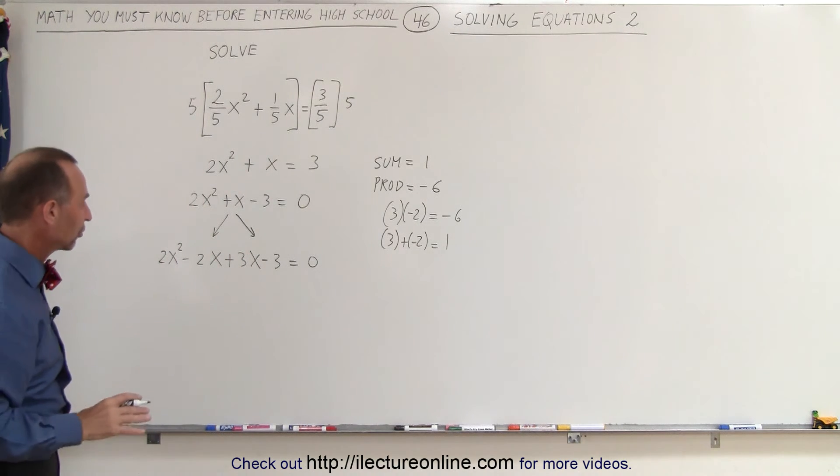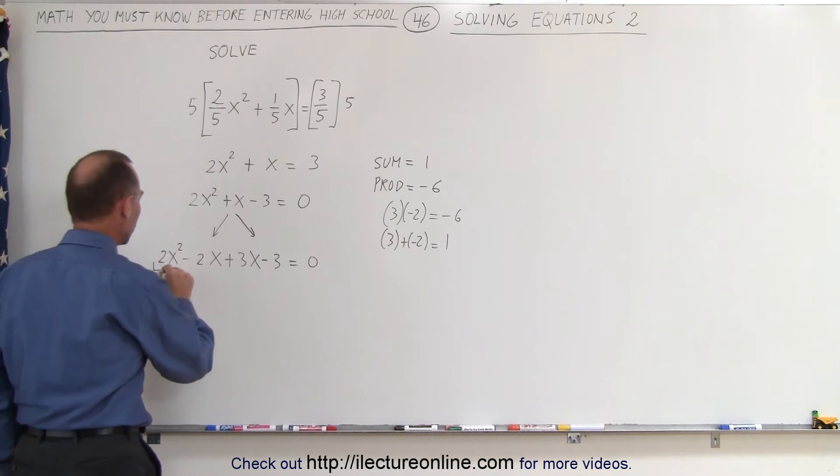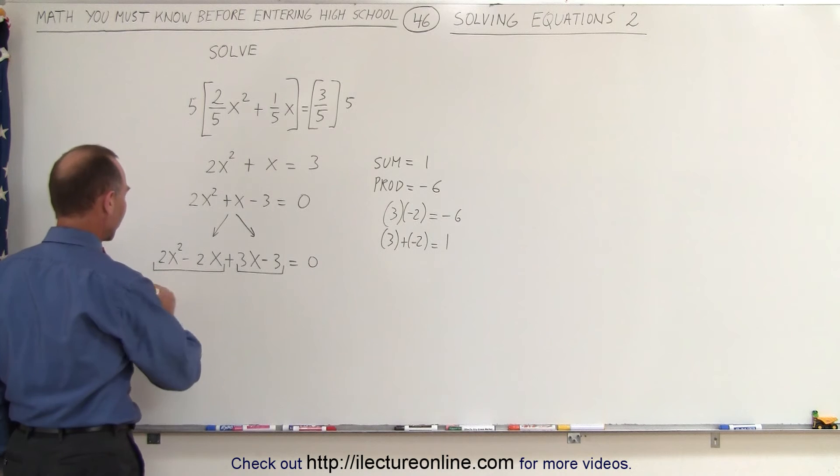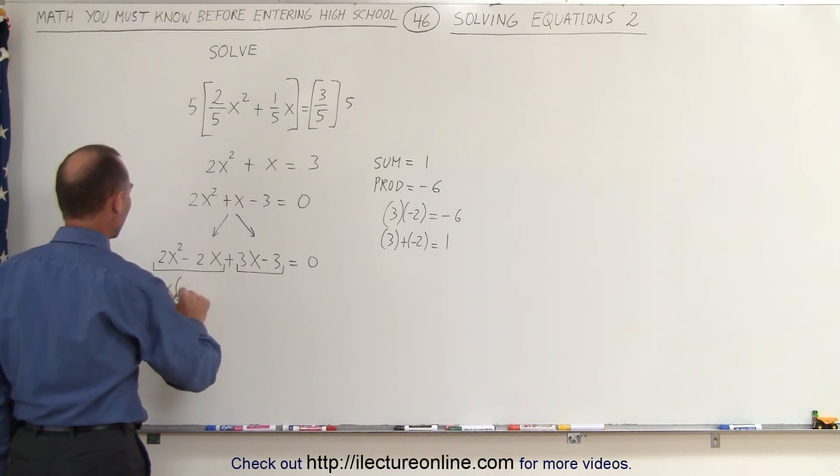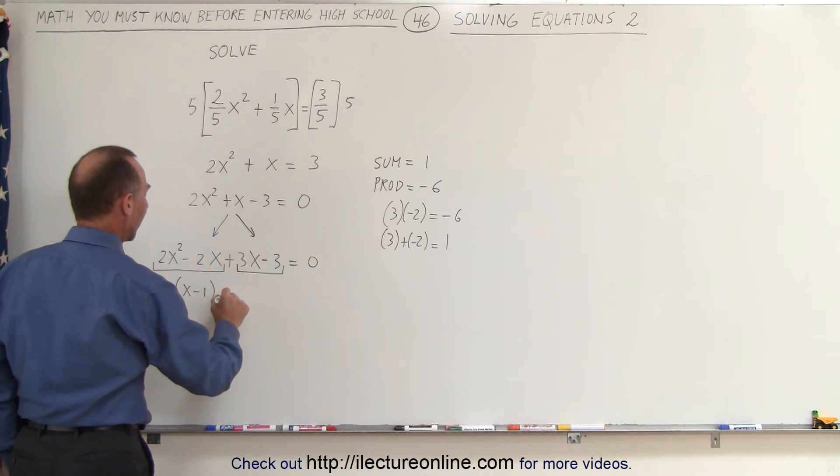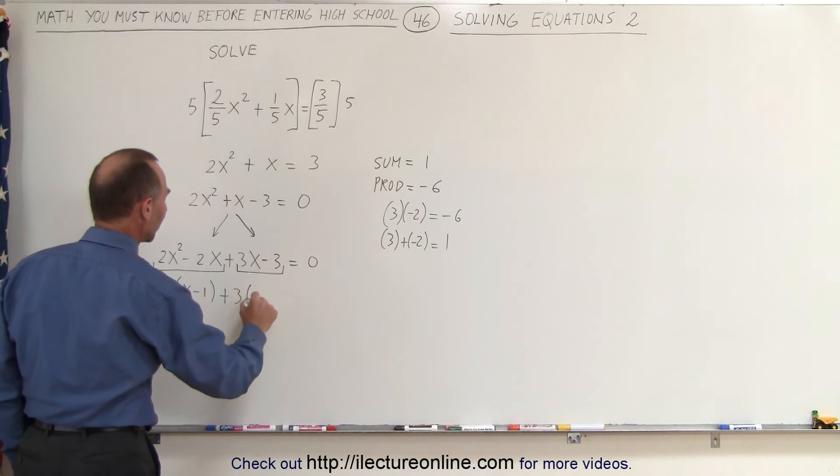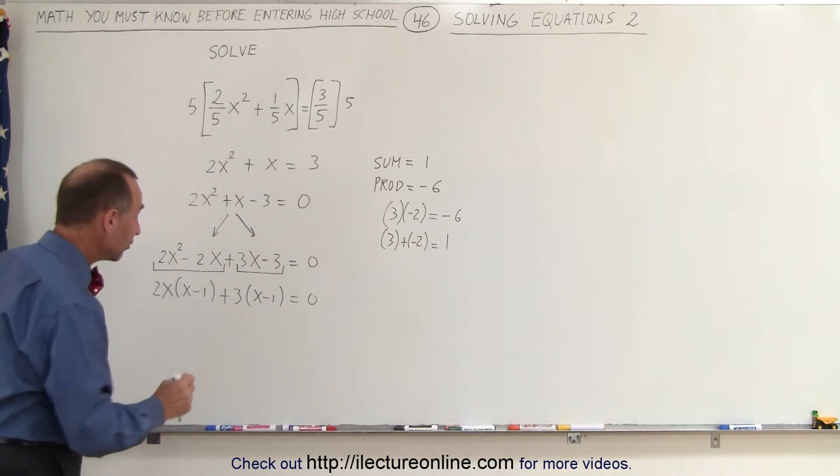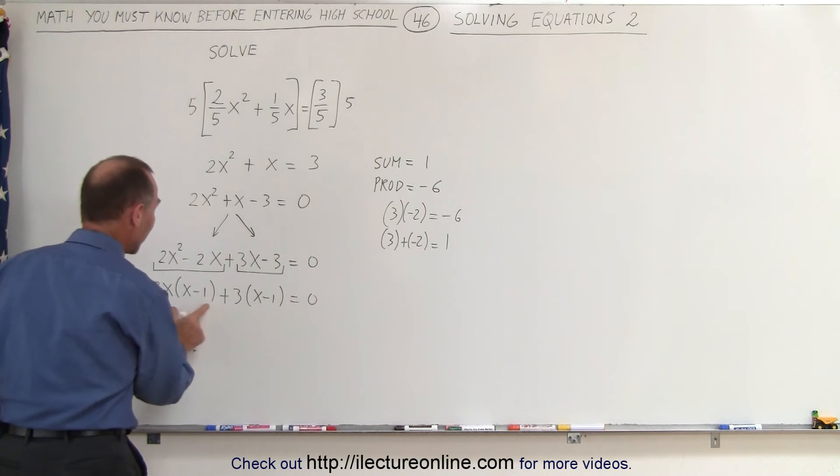Now let's see if we can factor this. We're going to group them in two groups of 2. On the left side, we can factor out a 2x, and we'll end up with an x minus 1, and plus 3 times, here we get an x minus 1. And it looks like it is factorable because now we can factor out a common term of x minus 1.